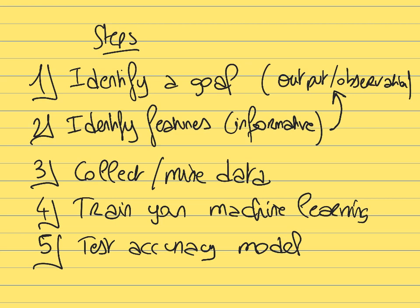To test accuracy for a cat-or-dog classifier, you provide the computer a set of labeled training pictures, train it, then provide new pictures without labels. You assess whether the computer's predictions are correct — checking if it gets the right answer for previously unseen examples.